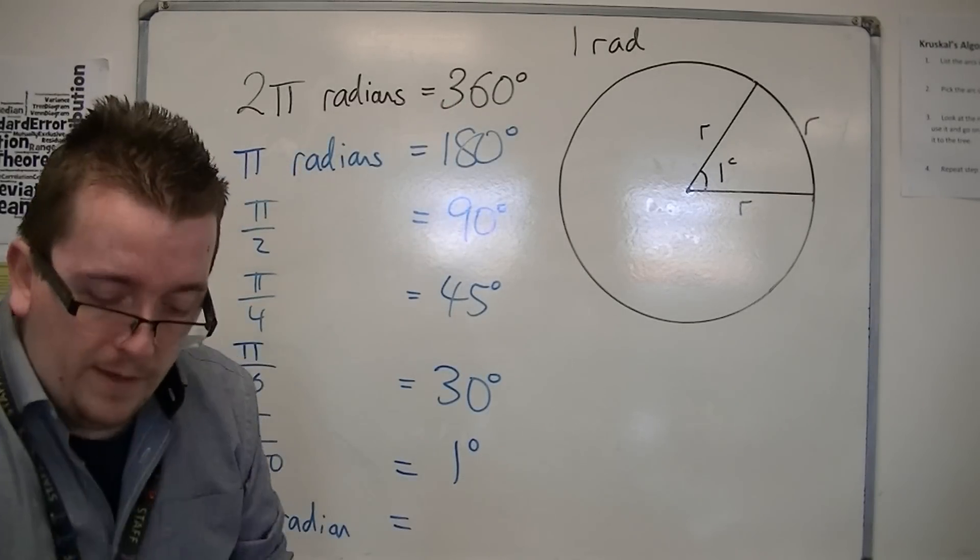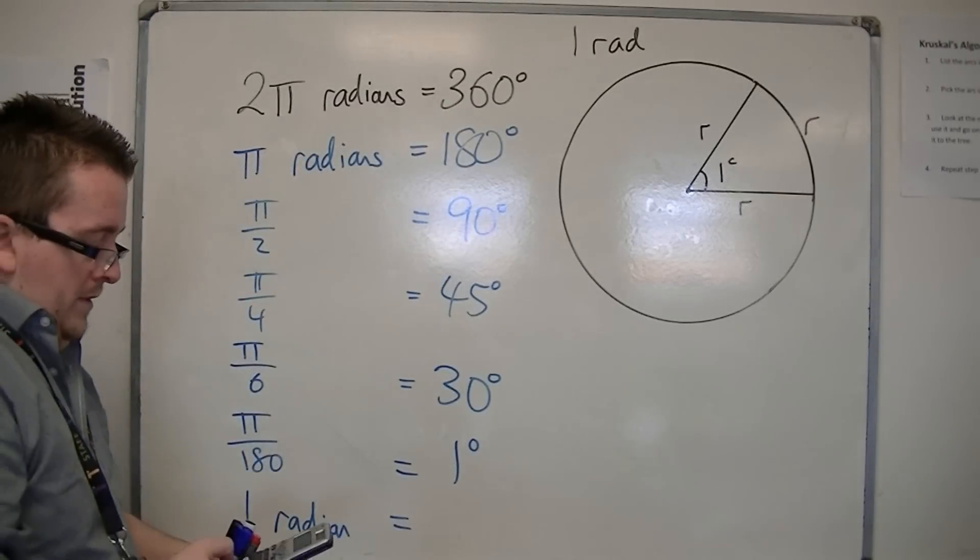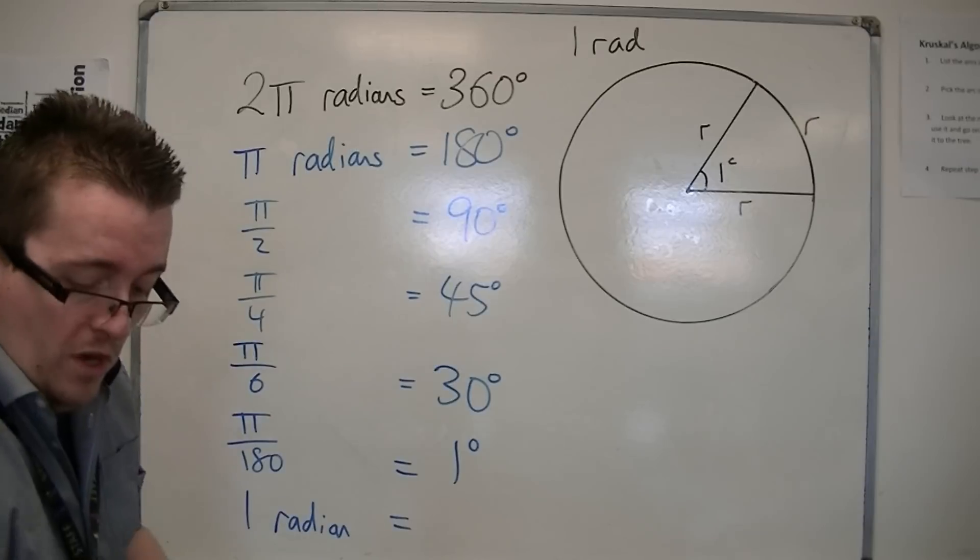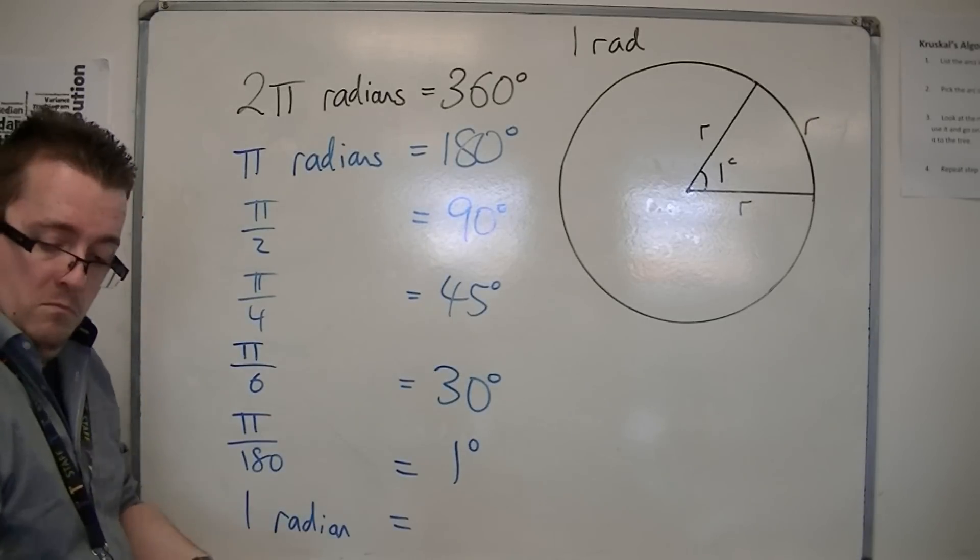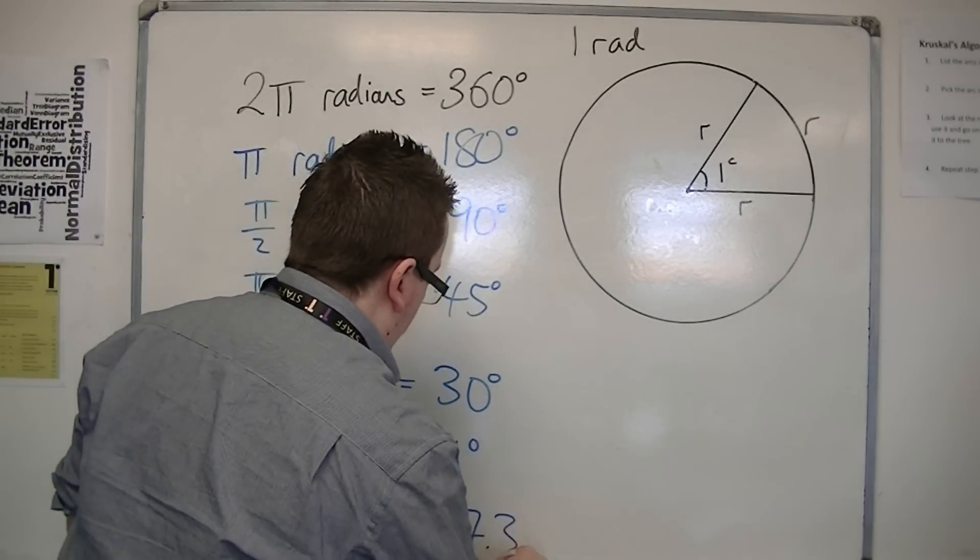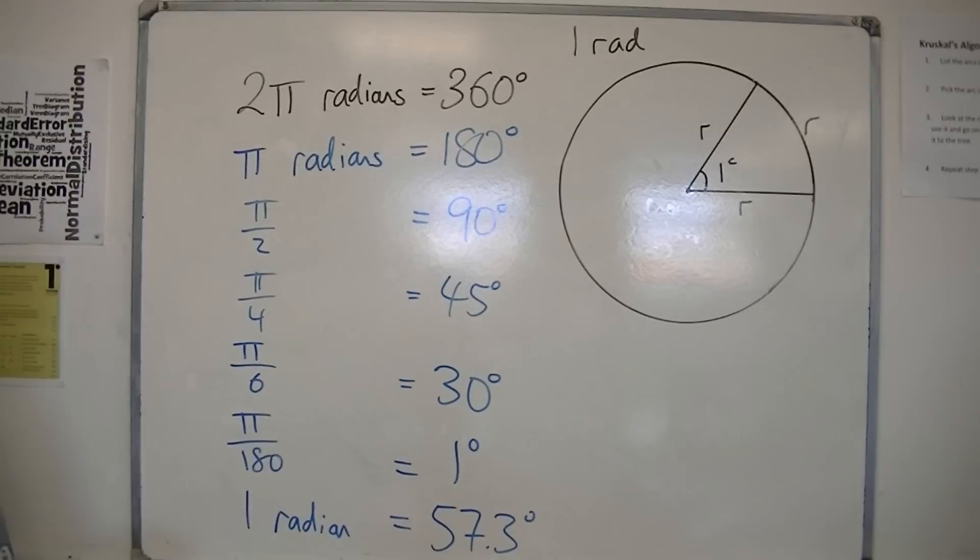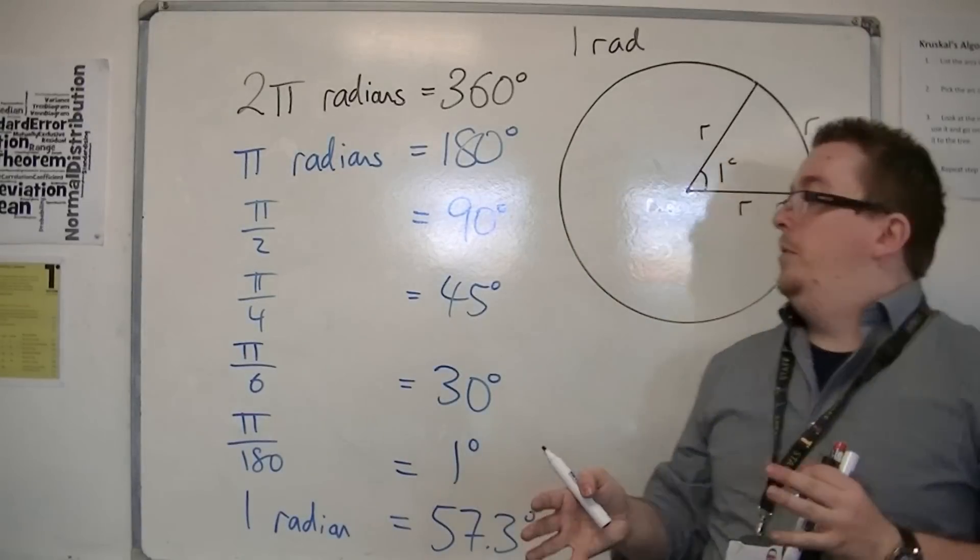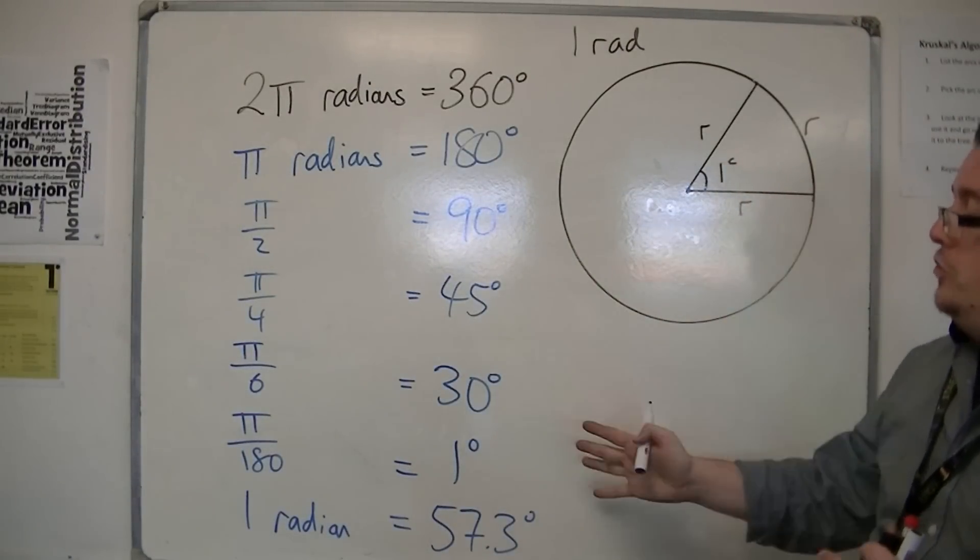Then it's 360 divided by 2 pi. So if we do that, 360 divided by 2 pi, well, that's 57.295. So 57.3 degrees, effectively, to 1 decimal place.